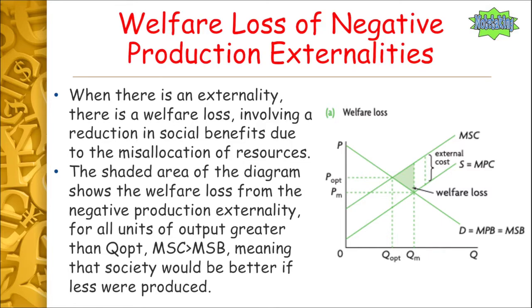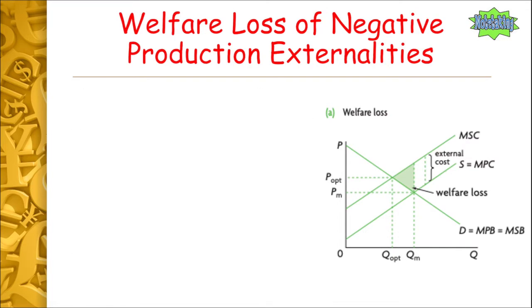The marginal social cost is greater than the marginal social benefit, meaning society would be better off if less were produced. Because we are producing at Pm and Qm, there is this extra cost to society of the polluted oceans and polluted air. There's an external cost and a welfare loss because extra resources have to be allocated to cleaning up that mess — that is why the welfare loss exists.